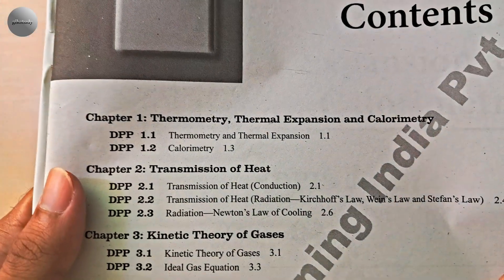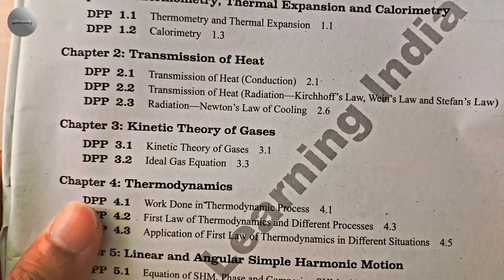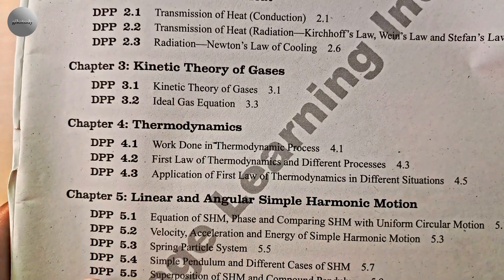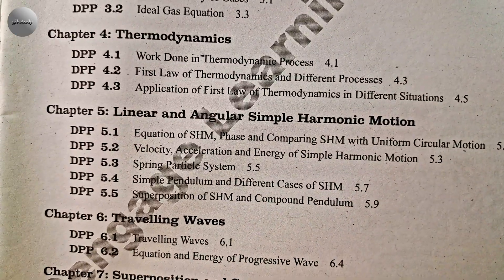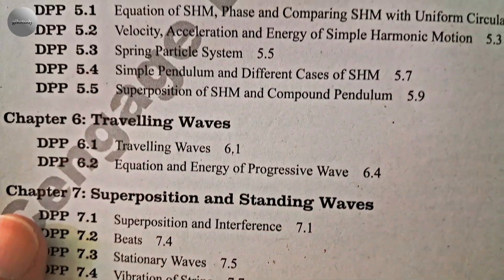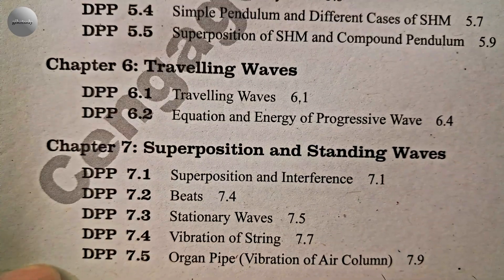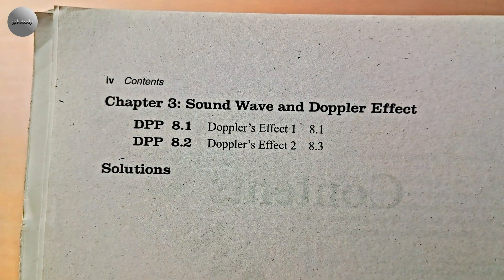The DPP contents mirror the book: Chapter 1 is Thermometry, Thermal Expansion and Calorimetry; Chapter 2 is Transmission of Heat; Chapter 3 is Kinetic Theory of Gases; Chapter 4 is Thermodynamics; Chapter 5 is Linear and Angular Simple Harmonic Motion; Chapter 6 is Traveling Waves; Chapter 7 is Superposition and Standing Waves; and Chapter 8 is Sound Waves and Doppler Effect, with solutions.